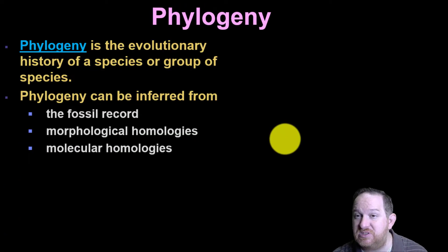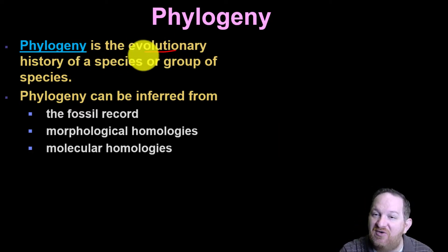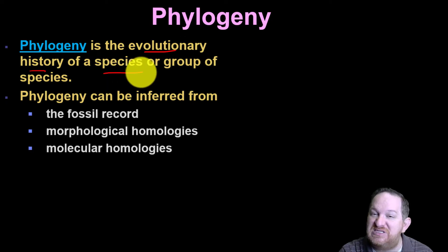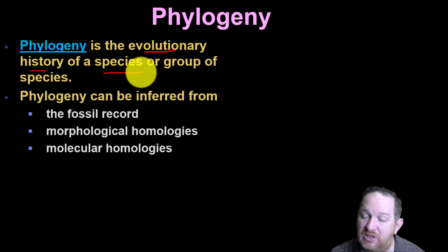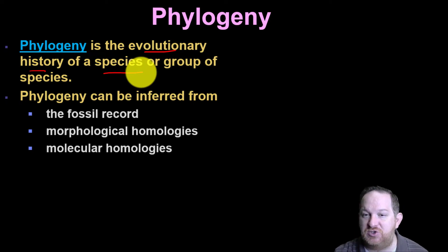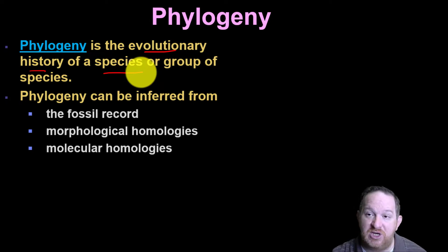When we talk about grouping organisms, we use the word phylogeny a lot. Phylogeny is just the evolutionary history of a species. So when we're talking about a phylogenetic tree, or the phylogeny of an organism, we're talking about what is their evolutionary history. How do we determine the evolutionary history of an organism?